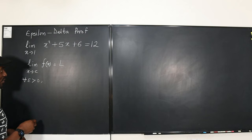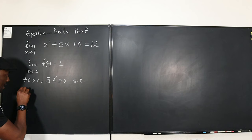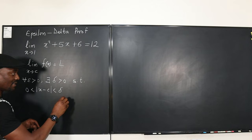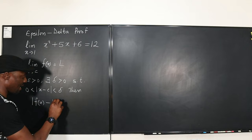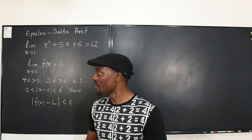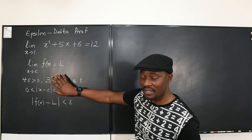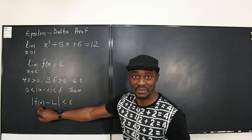The statement is: whenever this function moves away from the limit by epsilon, you also have to move away from the target point by delta. So there exists a delta greater than zero such that if zero is less than the distance of x from the target point C and it's less than delta — meaning x is within zero and delta — then f(x) is not too far from L: the absolute value of f(x) minus L is also less than epsilon.